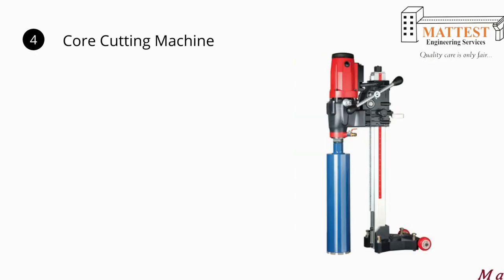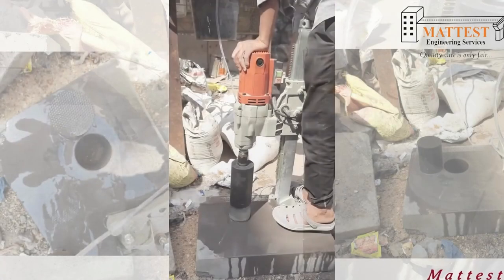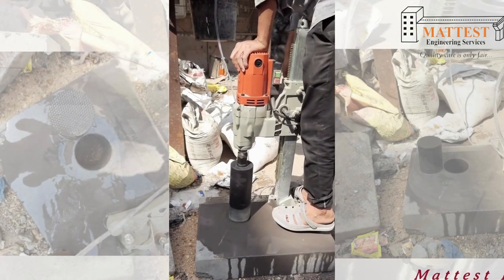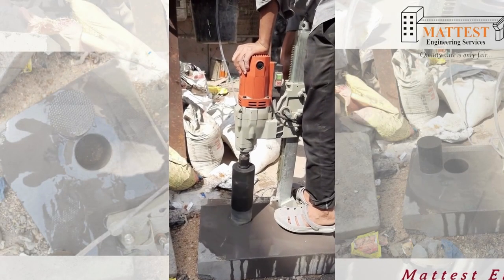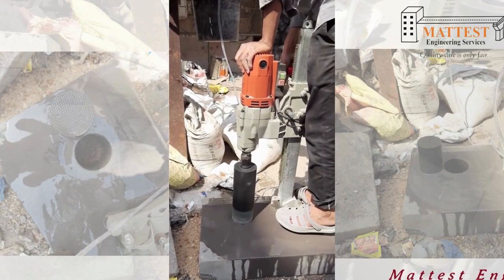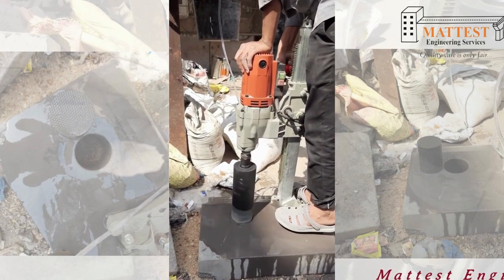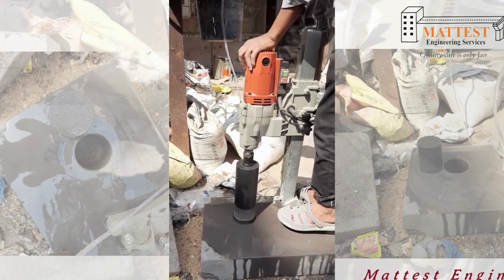Now for performing this test, we proceed step by step. Step 1: using core cutting machine, cut two specimens, one from each end of the curb stone.